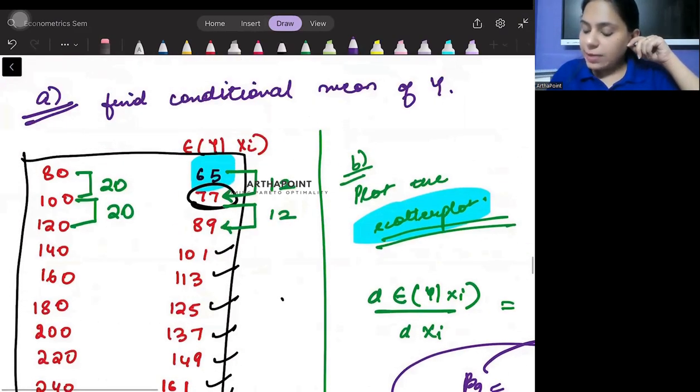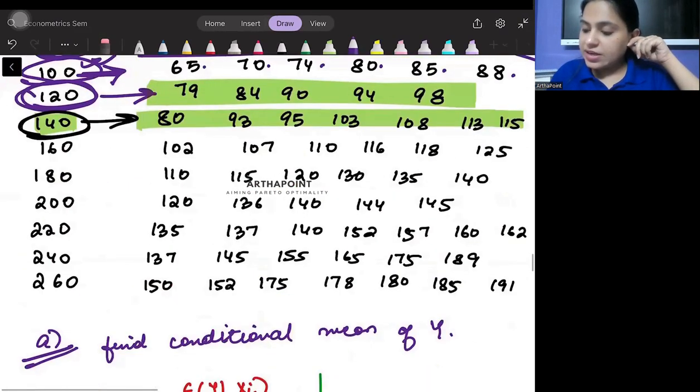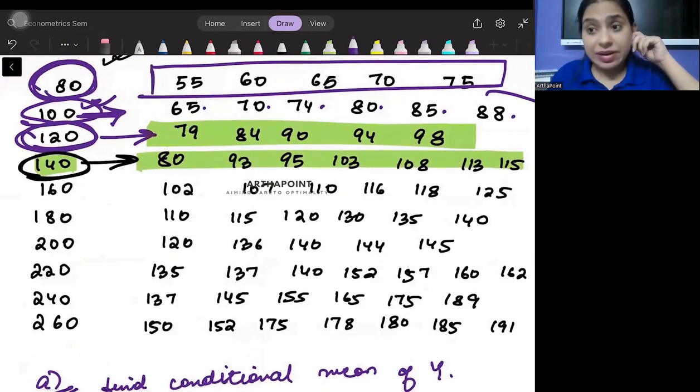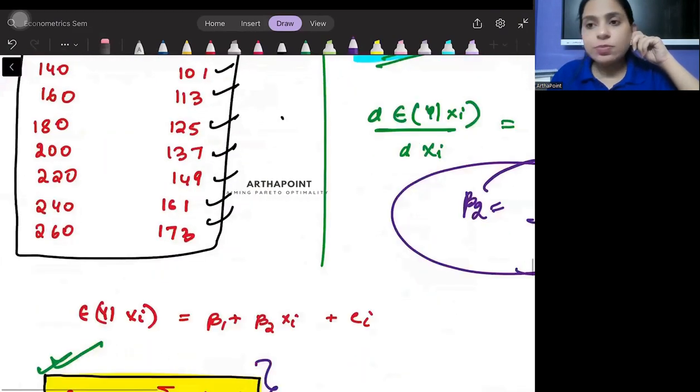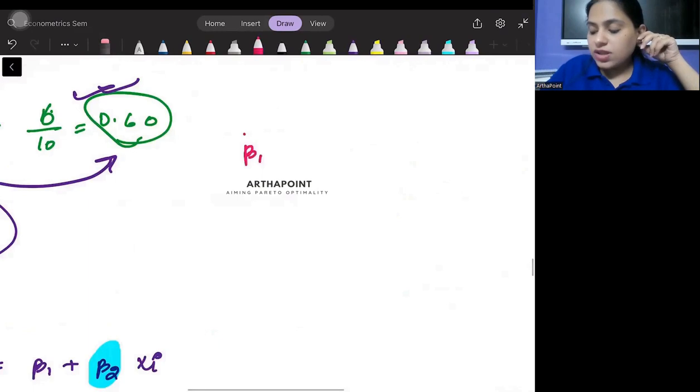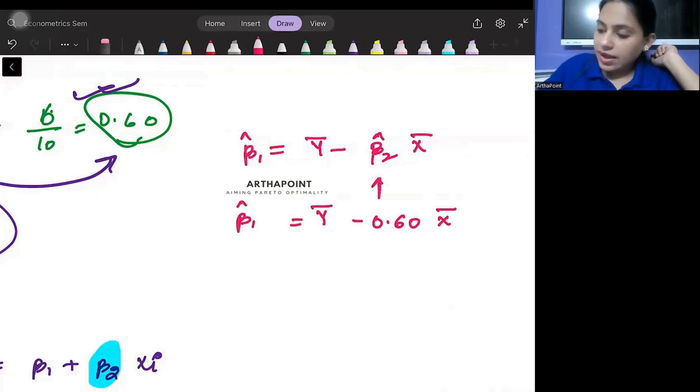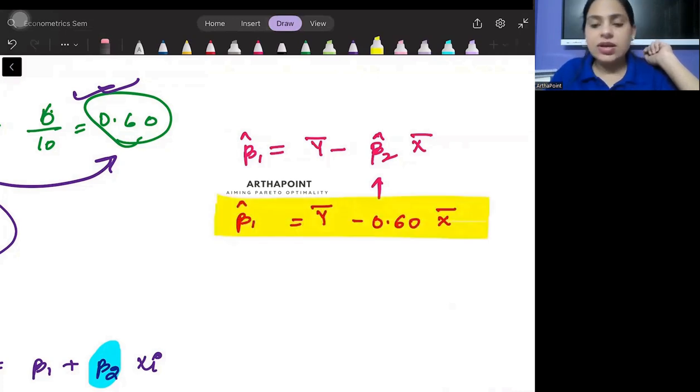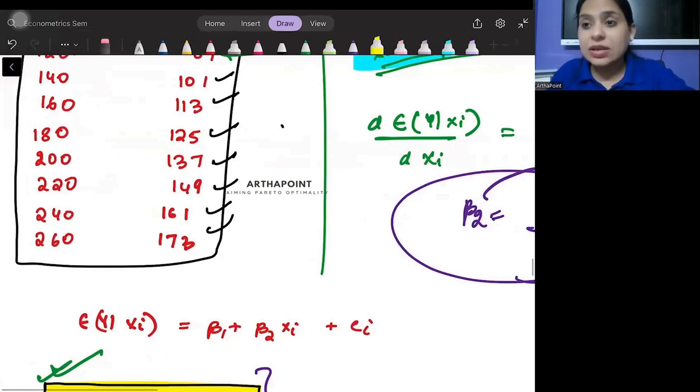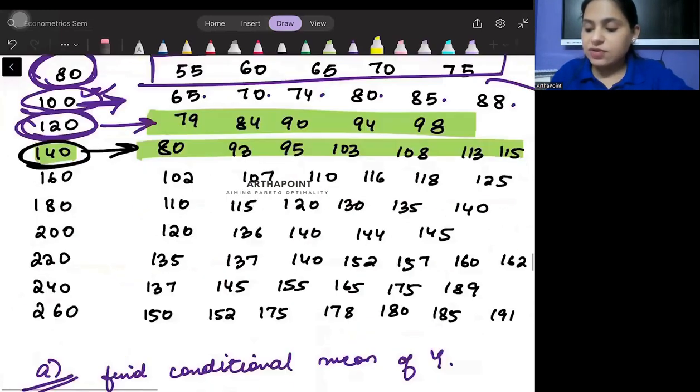Now for beta 1, I need to find out the remaining part. Then only I can find the regression equation. For beta 1, I know the formula: beta 1 hat will be y bar minus beta 2 hat x bar. Beta 2 hat I have found at 0.60. X bar, y bar will give beta 1 hat. Now I need to find the mean of y and x.